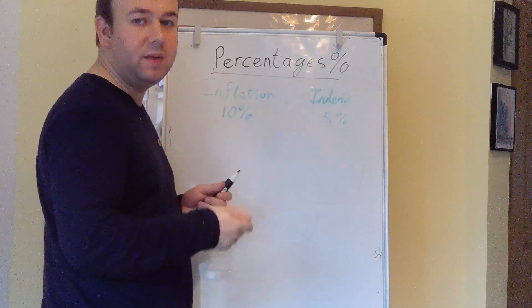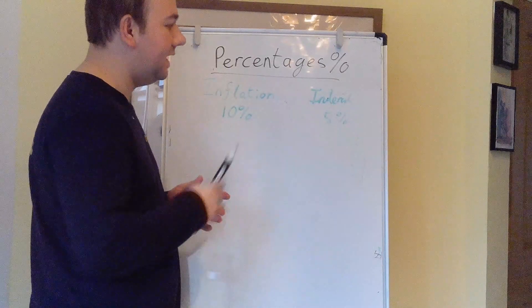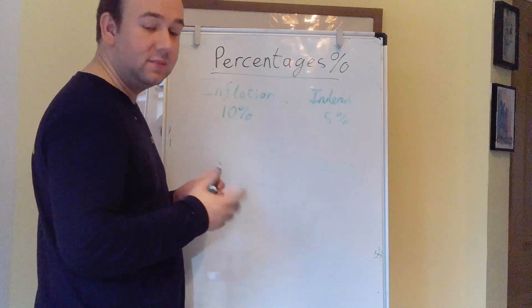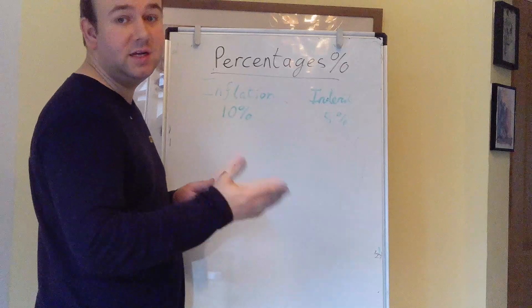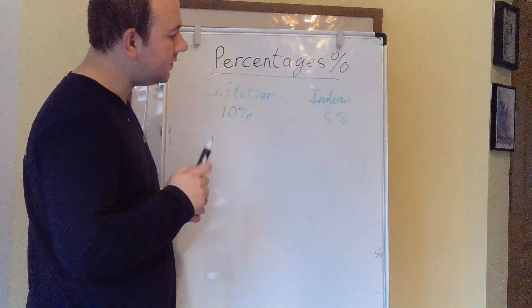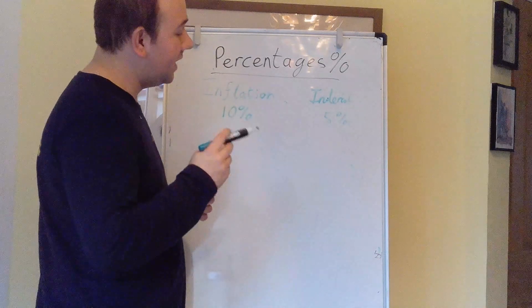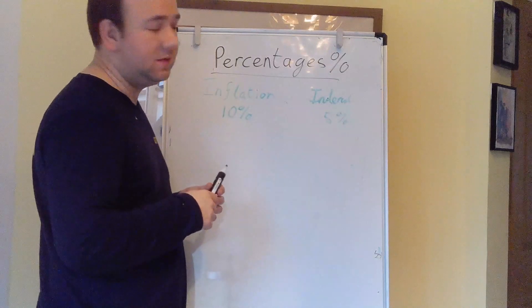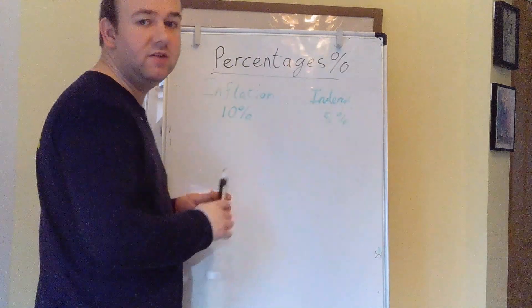We also have, if you put your money into a bank or a savings account, it pays interest on that, so the value of your money goes up. At the moment in the UK, some of the best interest rates you're going to get are around that 5% mark.